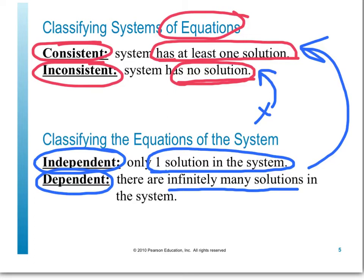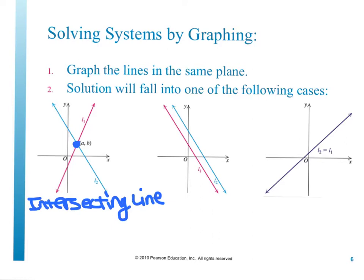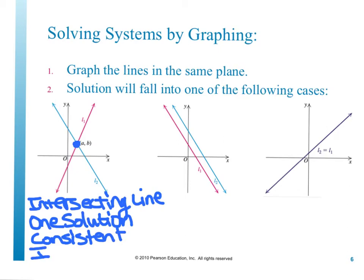To solve a system of equations by graphing, you graph those linear equations on the same coordinate plane. The first case is intersecting lines — the solution is the ordered pair at the point of intersection. Since there is one point of intersection, there is one solution. That means the system is consistent, and since there is exactly one solution, the equations are independent.